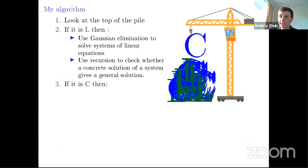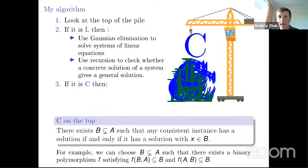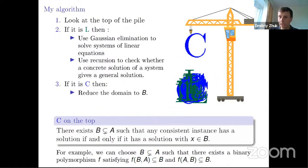What if I have C on the top? In this case, everything is even easier. It means that there exists some B which is strictly smaller than A, such that any consistent instance has a solution if and only if it has a solution with X being inside of B. So it means that I can safely reduce our domain to this B. And I know for sure that I cannot lose all the solutions. Thank you very much.